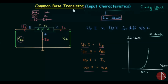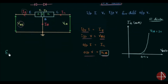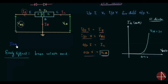This is also the input characteristics of the common base transistor, but the important thing is the effect on characteristics with a change in VCB. Let's say this plot is for VCB equal to 1V. Now we have to study the effect when we increase or decrease the output voltage VCB. To understand this effect we first need to understand the Early effect, which is a very important concept in analog electronics.